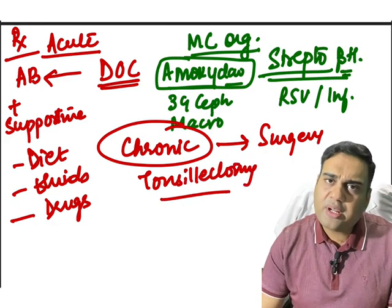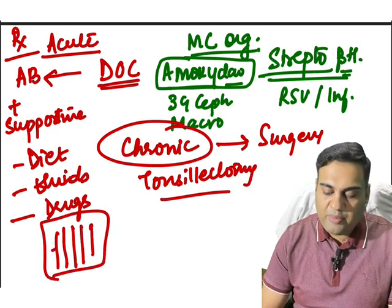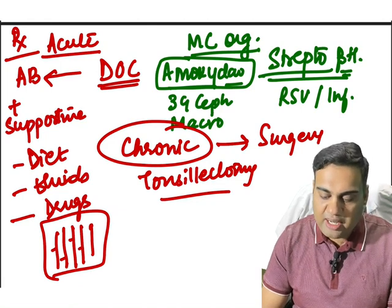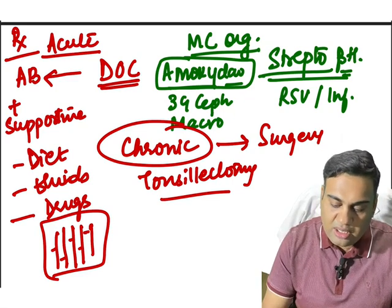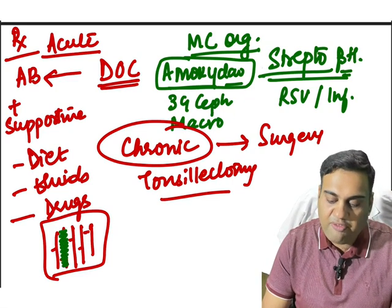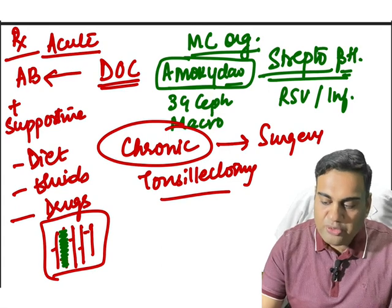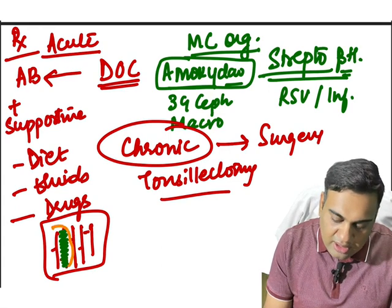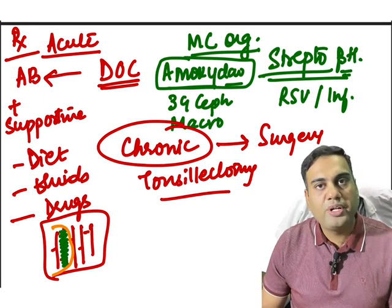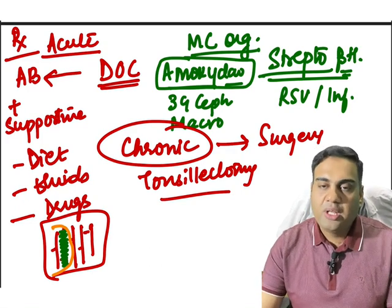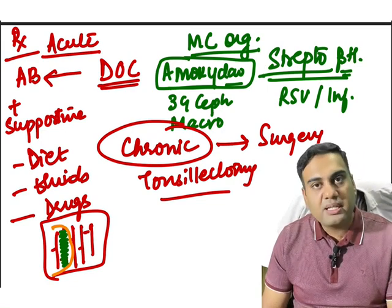Quick revision of pharyngeal wall layers: mucosa, submucosa, pharyngobasillar fascia, constrictor muscles, and buccopharyngeal fascia. The tonsil is in the submucosal layer — a lymphoid organ in the lamina propria of the submucosa. When removing the tonsil, you remove it just in front of the pharyngobasillar fascia; going deeper would reach the muscle, which will bleed.